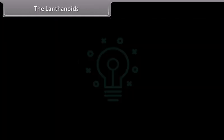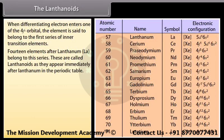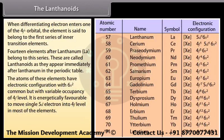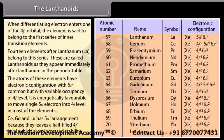When the differentiating electron enters one of the 4f orbitals, the element belongs to the first series of inner transition elements, called lanthanoids. Fourteen elements after lanthanum belong to this series. The atoms of these elements have a common 6s² configuration but with variable occupancy of the 4f level. It is energetically favorable to move a single 5d electron into the 4f level in most elements. Cerium, gadolinium, and lutetium have a 5d¹ arrangement because it leaves a half-filled 4f level, giving increased stability.